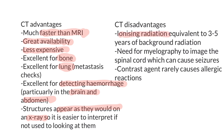Disadvantages of CT scan: the big one is ionizing radiation. A single CT scan is equivalent to about three to five years of background radiation. A big disadvantage for looking at the spinal cord is that you do need myelography, although we have performed thousands of CT myelograms at Southpaws without any major issues — though about 10% of patients are going to have a seizure or two in the post-operative period. The contrast agent occasionally causes allergic reactions, although we've never really seen that in our practice.